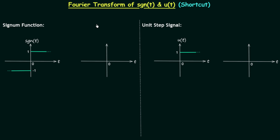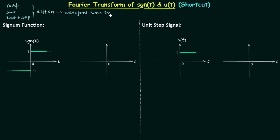According to the method, whenever we have a signal which is a combination of ramp signals, step signals, or both, we will first differentiate the given waveform n number of times until we get a waveform that is a combination of only impulses. Once we have this waveform, we can easily obtain the Fourier transform within three or four steps.